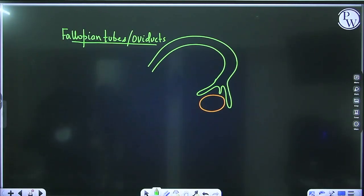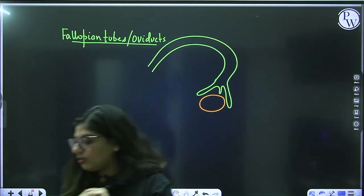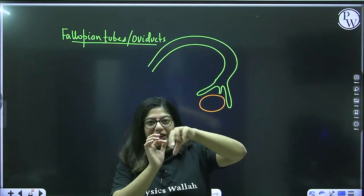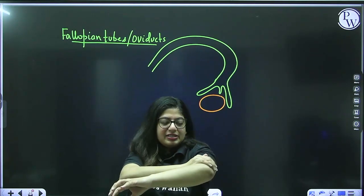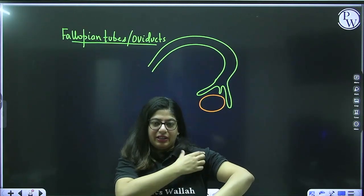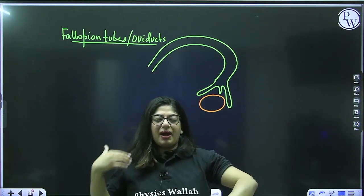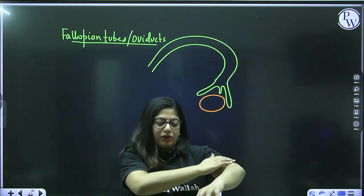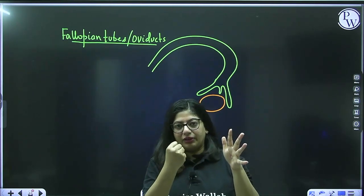The widest area of the fallopian tube is the ampulla, and after that comes the narrow isthmus — like a shoulder connecting the arm to the chest — which joins the fallopian tube to the uterus. So the three parts are: infundibulum (funnel-shaped, near ovary), ampulla (widest portion), and isthmus (narrow, joins uterus).